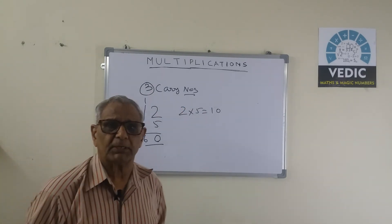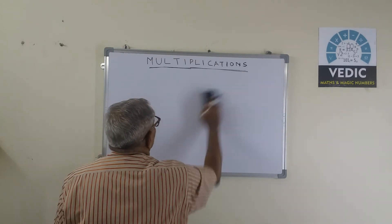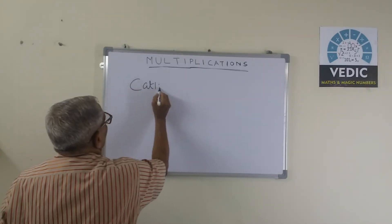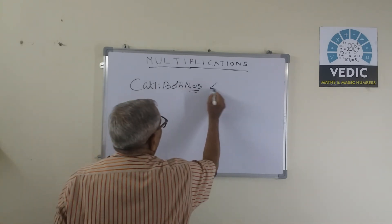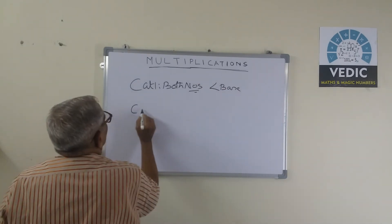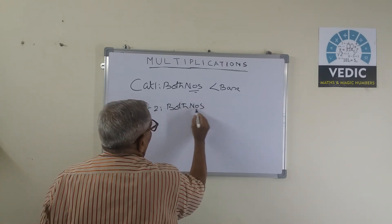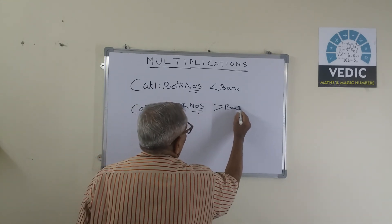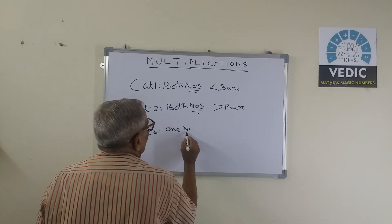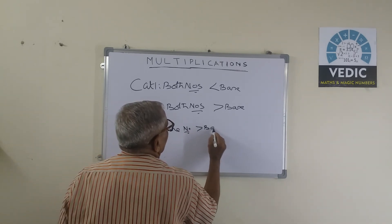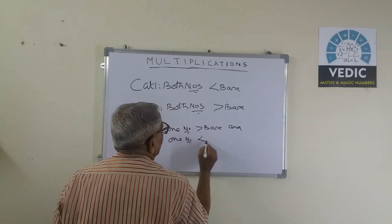Friends, there are three categories of multiplications. Category 1: both numbers are less than the base. Category 2: both numbers are more than the base. Category 3: one number more than the base and one number less than the base.